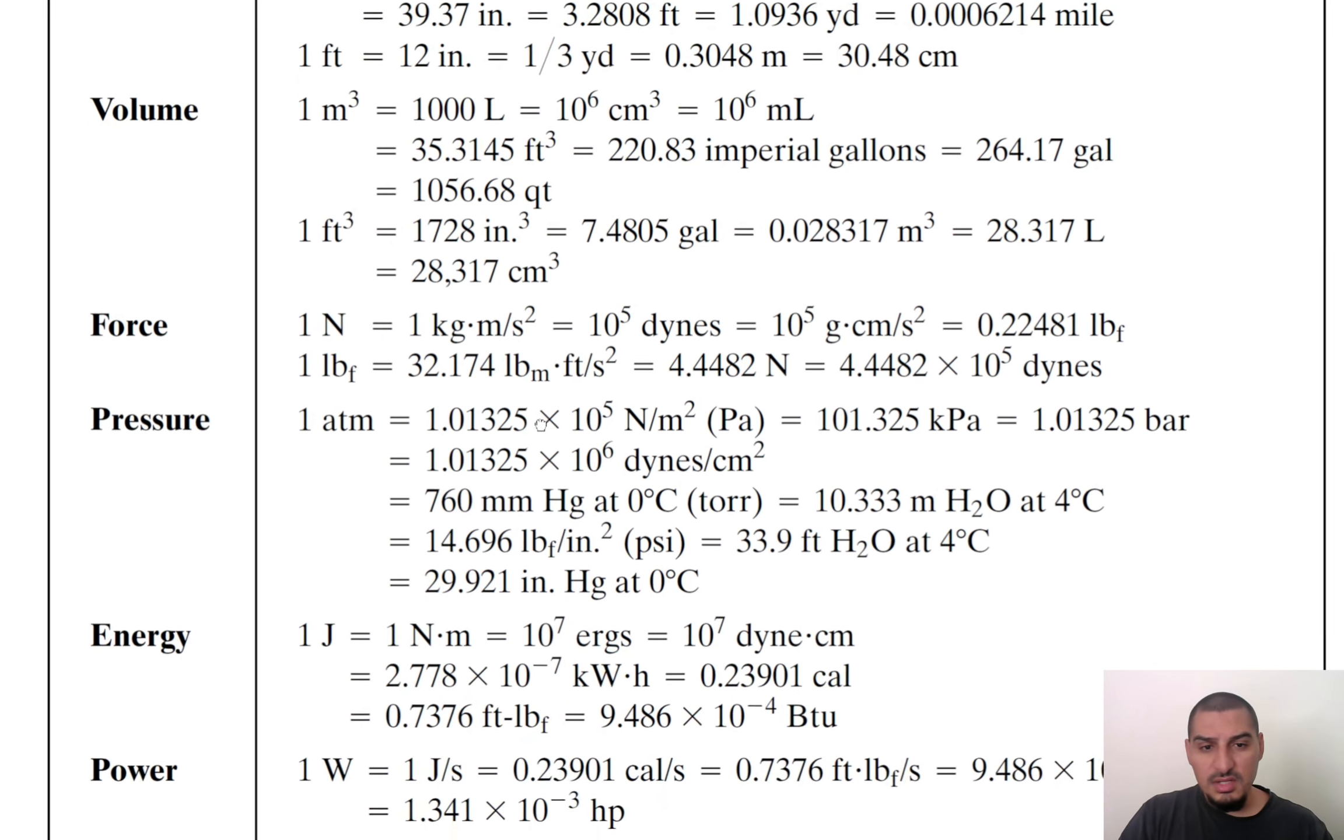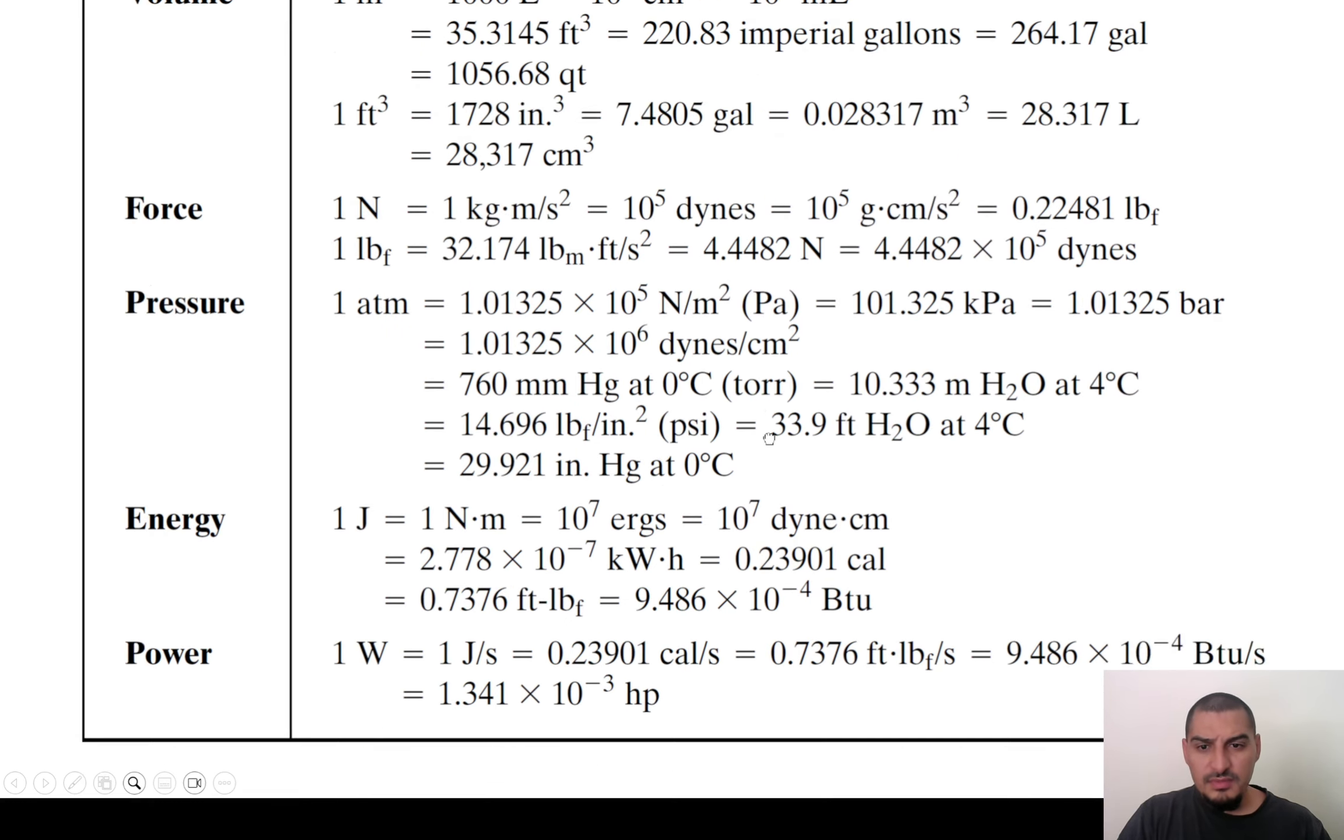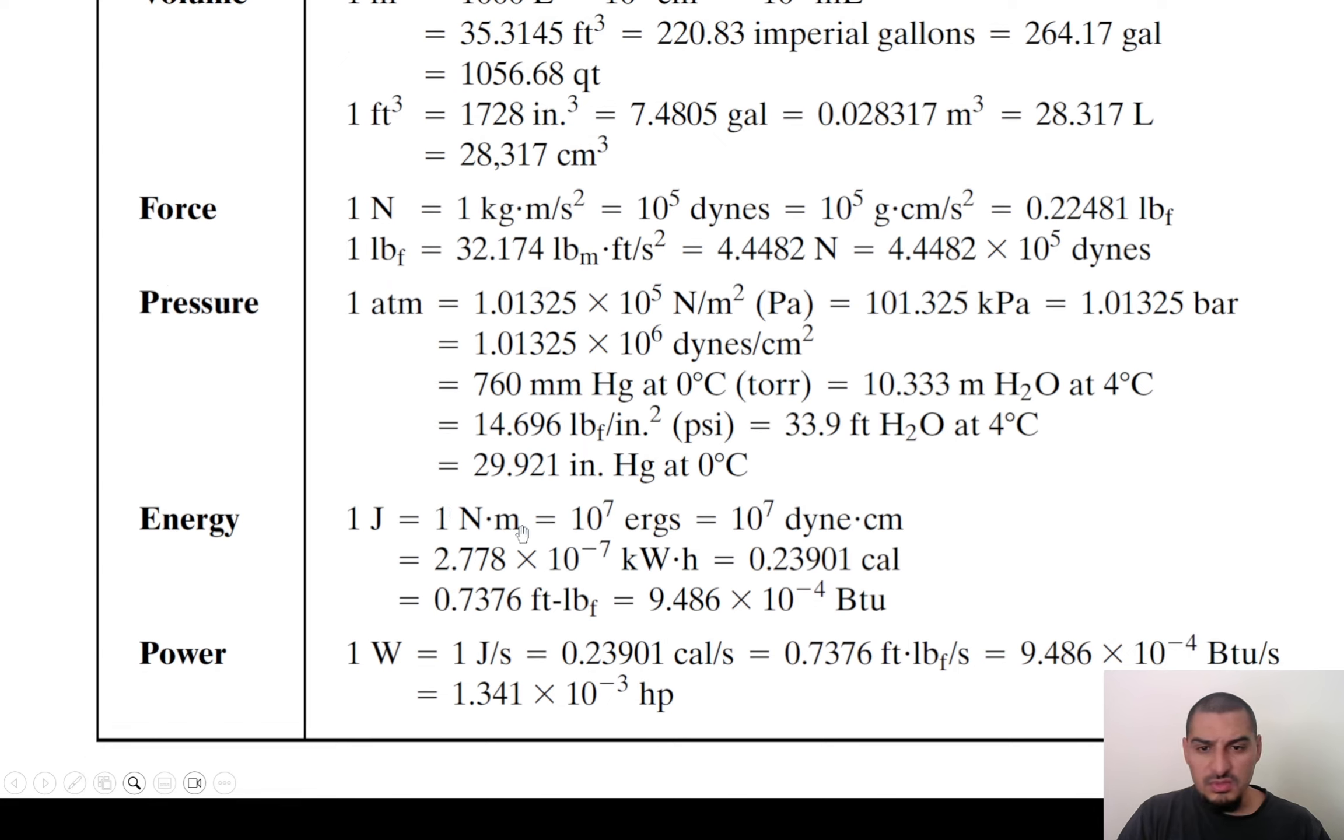The same here for, you'll have here pressure, atmosphere, Pascal, kilopascal, bar, dynes per centimeter square, which is equivalent to Newton per meter square. Of course, we have millimeter mercury, meter water, we have psi, and then for the energy, we have joule, newton, newton multiplied by meter, and we have the erg. The erg is dyne multiplied by centimeter, which is newton multiplied by meter. So erg is like joule for the CGS units.